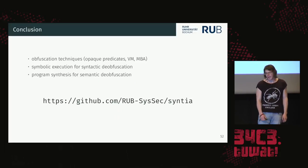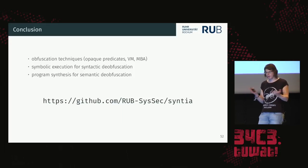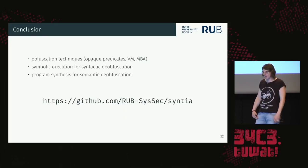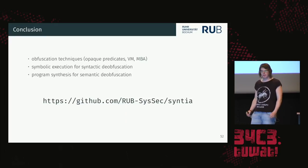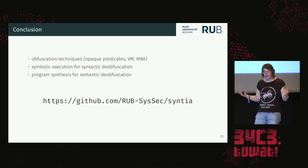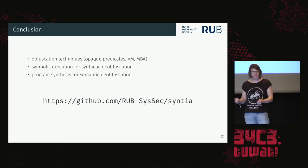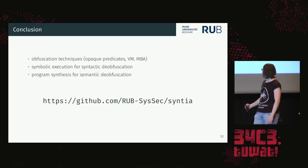To conclude: we discussed obfuscation techniques — mainly opaque predicates, VM obfuscation schemes with hardening, and mixed boolean arithmetic — which can all be used together and are handled at the instruction trace level. We discussed symbolic execution for syntactic deobfuscation and saw its limitations with high syntactic complexity. On the other hand, by treating code as a black box to obtain IO samples and using program synthesis, we can work at the semantic level. Code, samples, and our framework Syntia are all available on our GitHub.